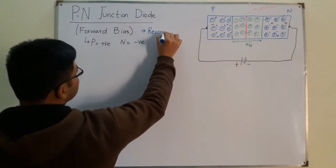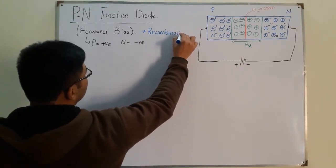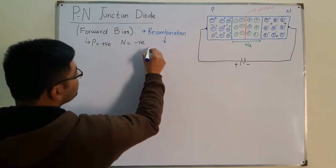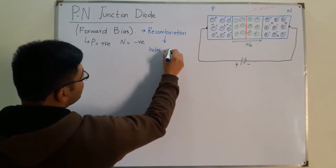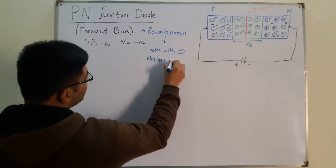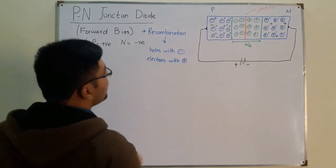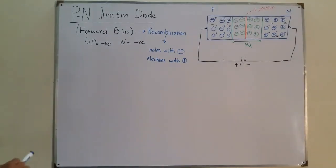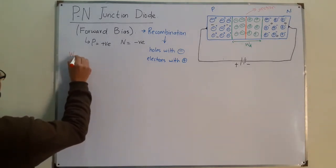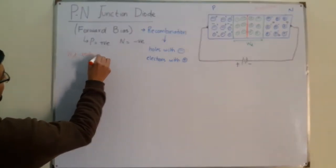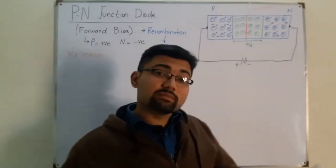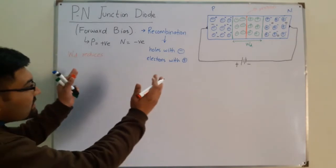Similarly on the N side, negative charges are sprayed, they are repelled, and the negative charges recombine with the positive ions. So under forward bias condition, recombination occurs: holes recombine with negative ions, and electrons recombine with the positive ions. The result is that the width of the depletion region, WD, reduces.